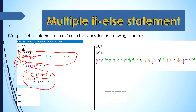Now we have a print function that will execute. If we go and check the condition again, and the condition is wrong, then the statement will not work and something else will be printed. Now we will see how we can reduce this multiple if-else statement into a shorthand statement.